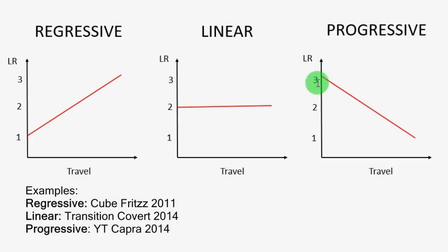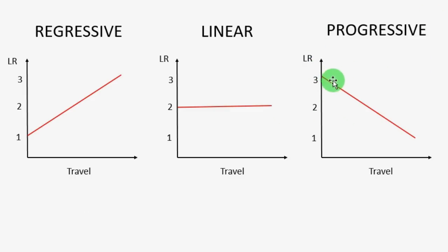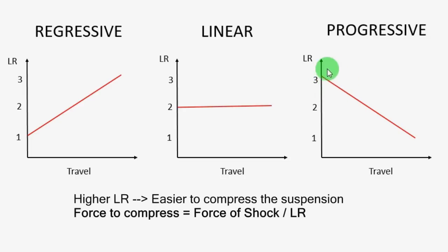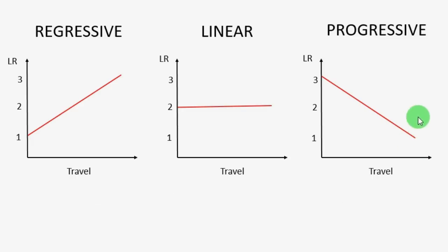On the other spectrum, we have the progressive bikes, which are my favorite type of design. In this case, you start with a higher leverage ratio, so the beginning of the travel is easy to compress — the bike is very sensitive to small bumps. And the end of the travel becomes harder to compress, which means you will have bottom-out resistance to drops and hard impacts.